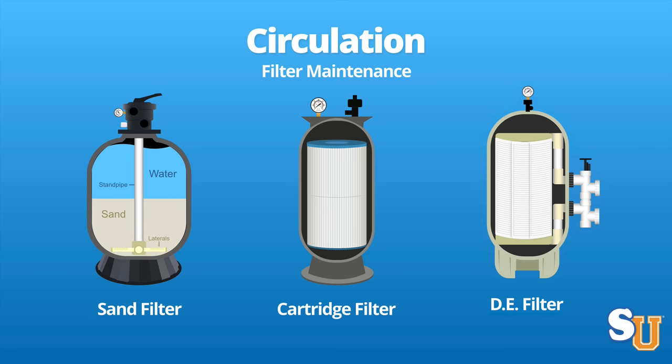Finally, we'll talk about a DE filter — diatomaceous earth. These are the only three types of pool filters, and a DE filter is very powerful at cleaning a pool. It does need to be backwashed every once in a while, and when you backwash it, you need to replace the DE powder that was backwashed out. DE is a fine white powder — be very careful, as it is a carcinogen, so wear a mask and protective eye gear when handling it. Again, the pressure gauge is your indication: 10 pounds over normal running pressure means it's time to backwash.